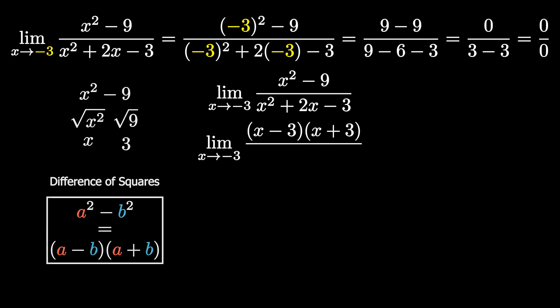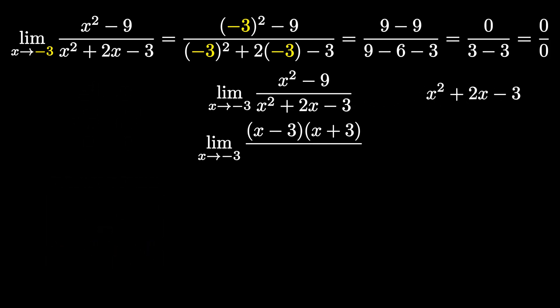So moving down to the bottom, to factor the bottom, we have x squared plus 2x minus 3. This is a trinomial, and notice that the coefficient in front of our x squared, well there's nothing there really, but we can say that it's 1. And when the coefficient of our x squared is 1, we want to factor as follows, where we focus on the last term, which is negative 3, and then the middle coefficient, which is 2. And essentially, what you want to do is you want to find two numbers that will both multiply to give you negative 3 and add to give you 2.